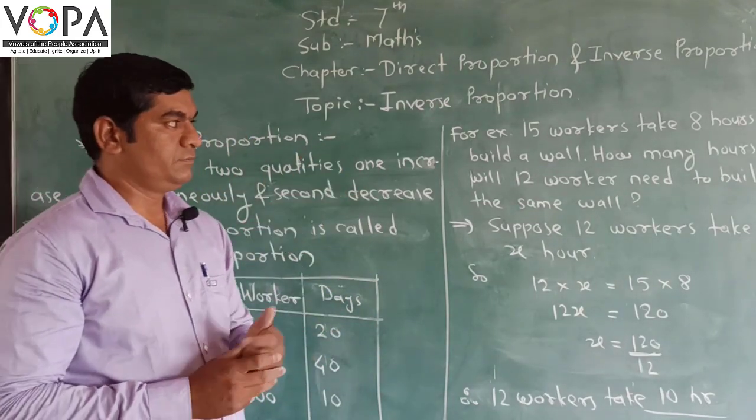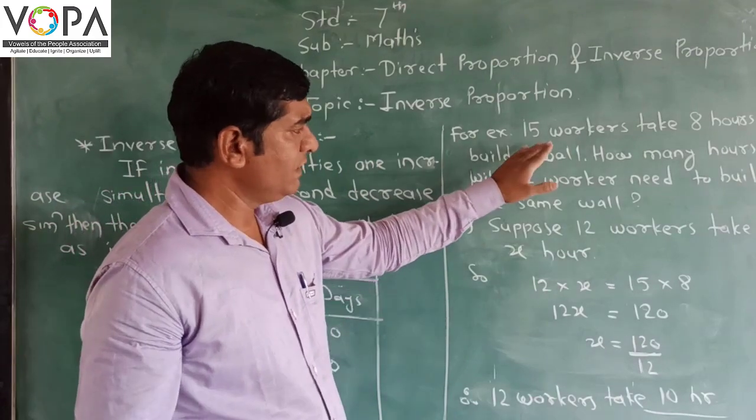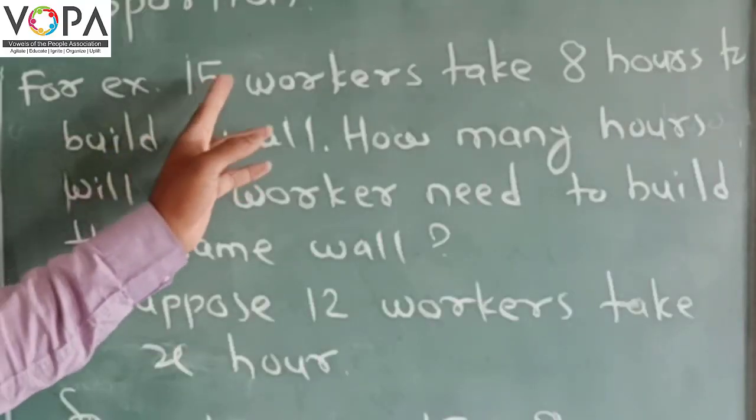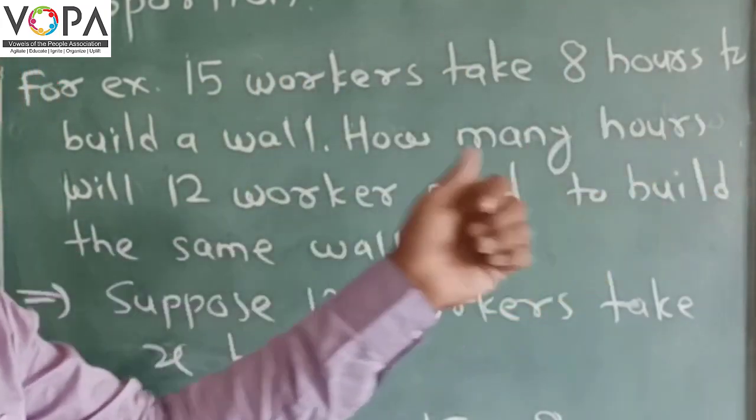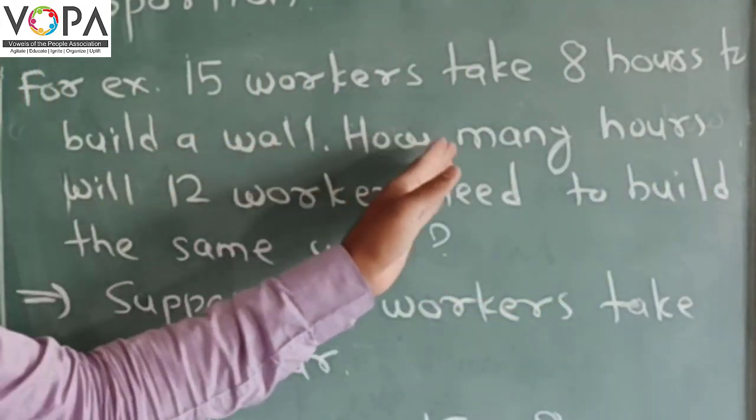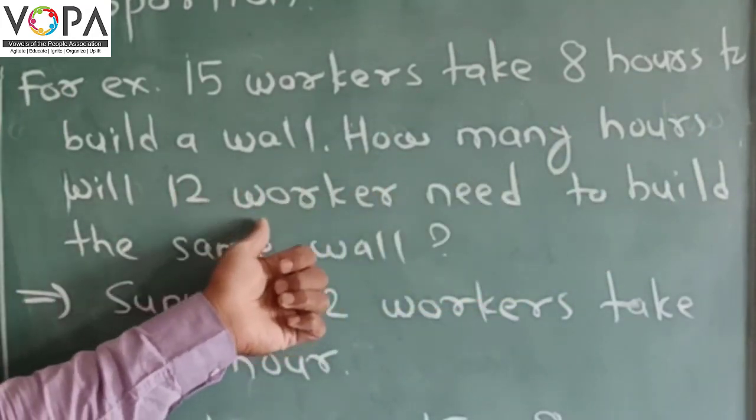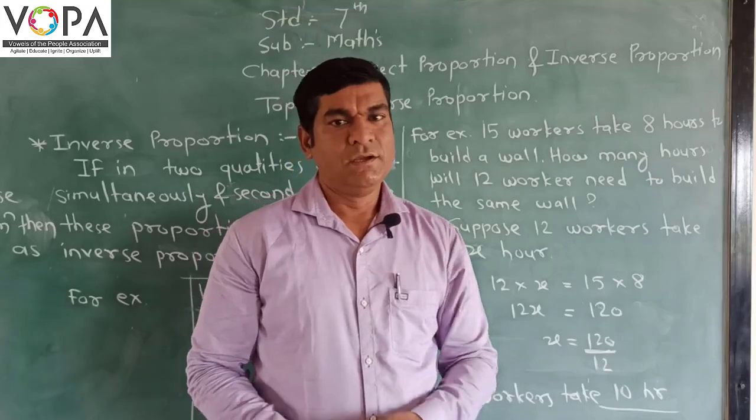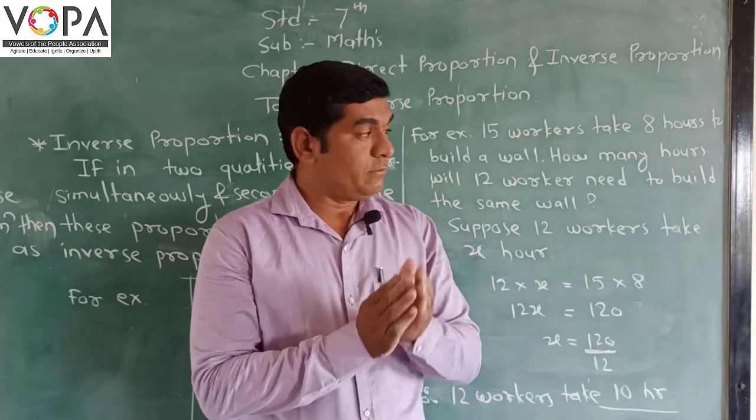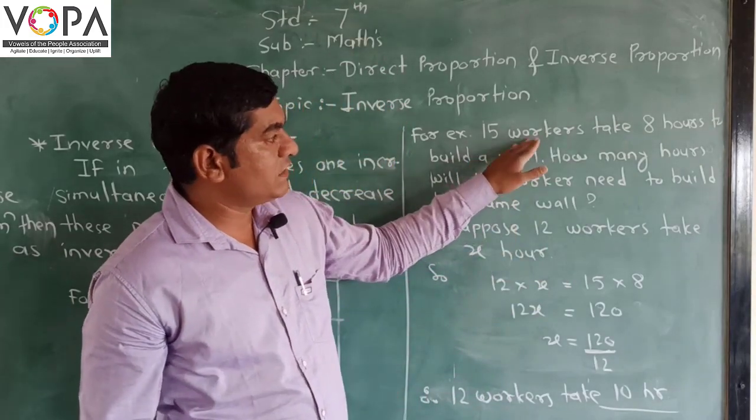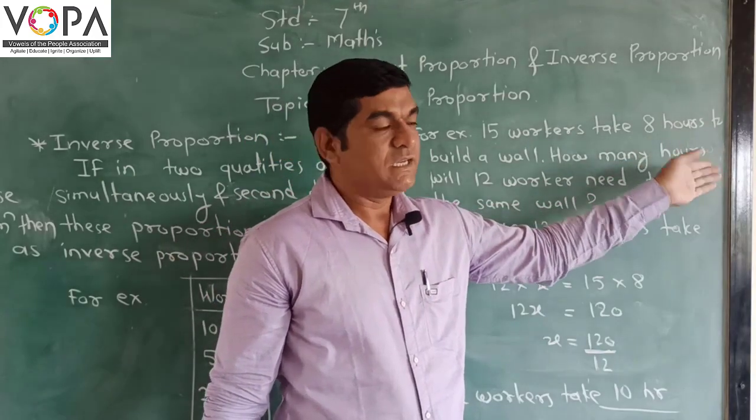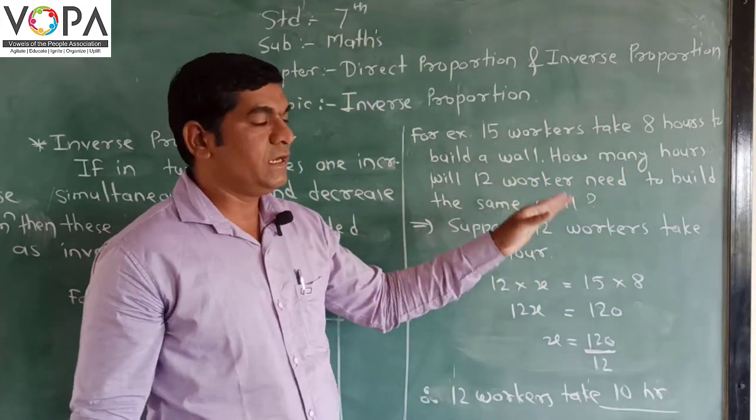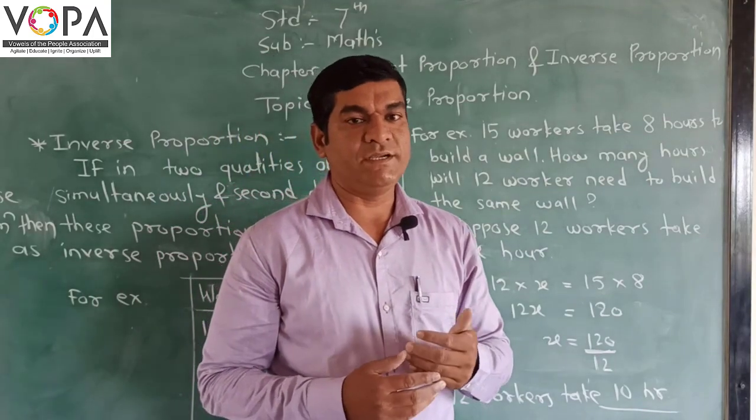Another example from our practice set. 15 workers take 8 hours to build a wall. How many hours will 12 workers need to build the same wall? The same work - 15 workers complete this work in 8 hours. Now we decrease the workers to 12. How many hours required to complete the work?